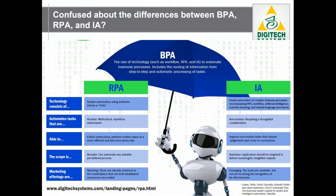Why is IA necessary? RPA is rules-based and works primarily with structured information, whereas IA opens up the possibilities to more complex processes that may require flexibility to adjust routing and rules based on a wider variety of input information. We liked this chart from Deloitte that helps explain the differences between RPA and IA — to see the image in more detail, visit the web address listed.